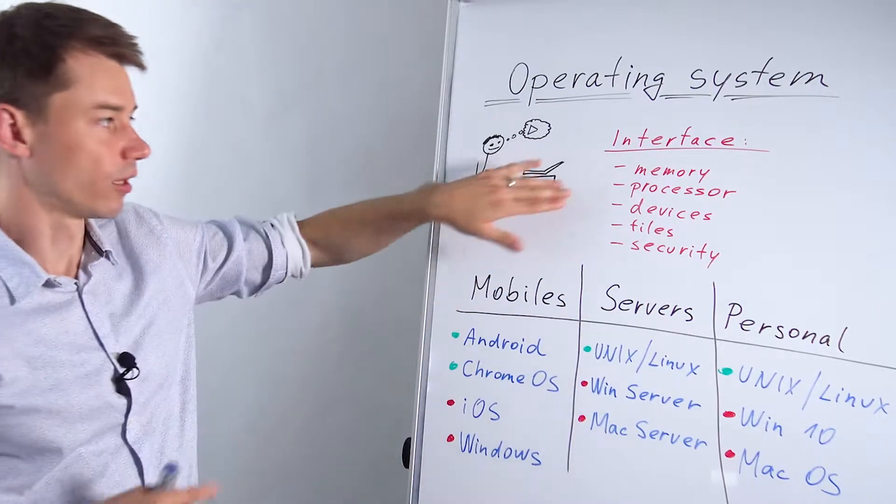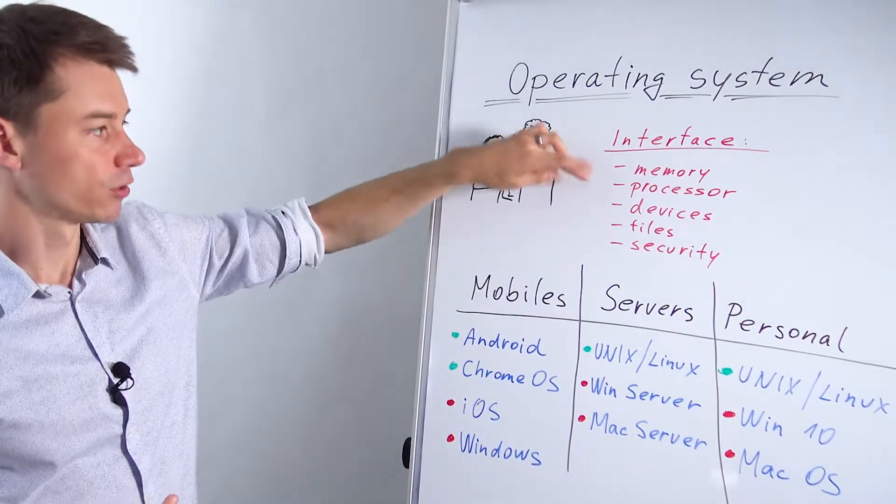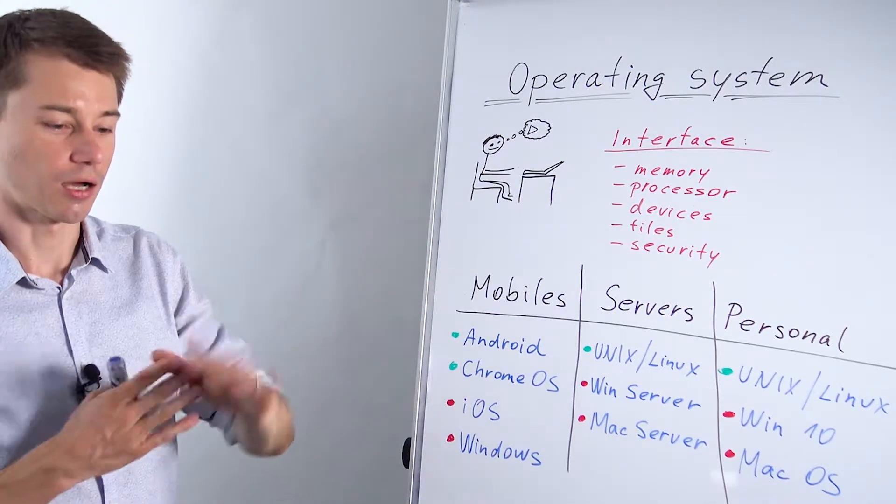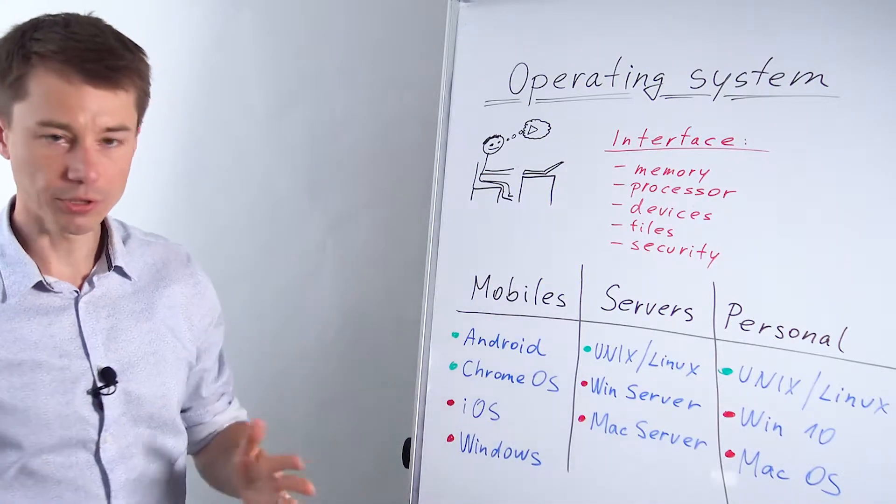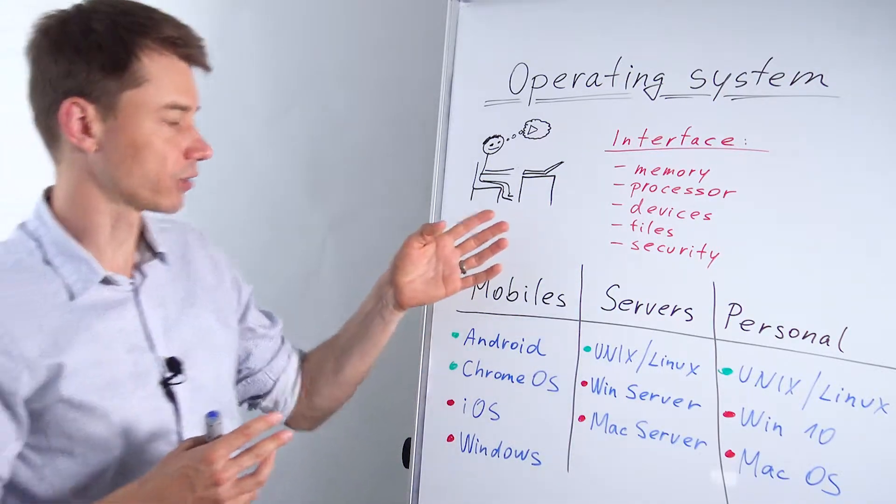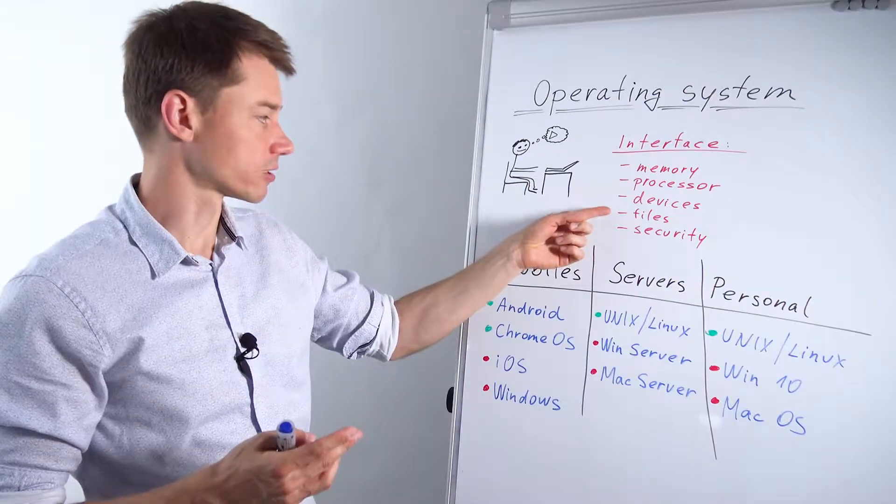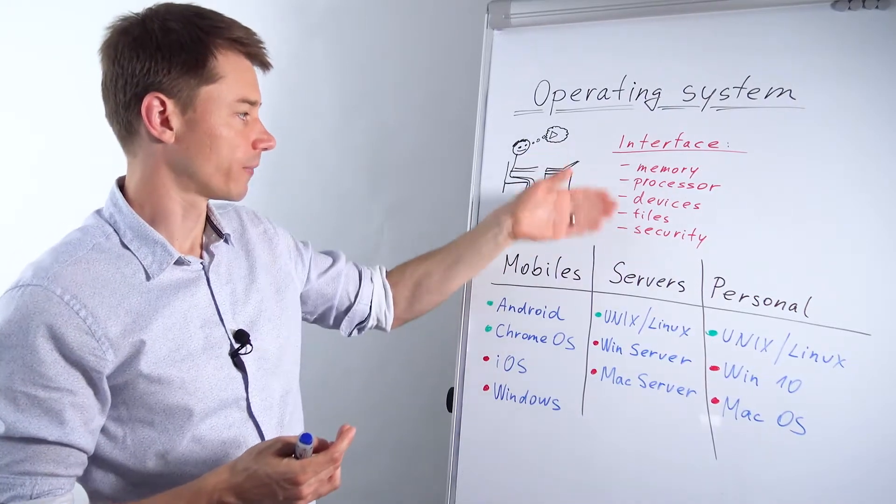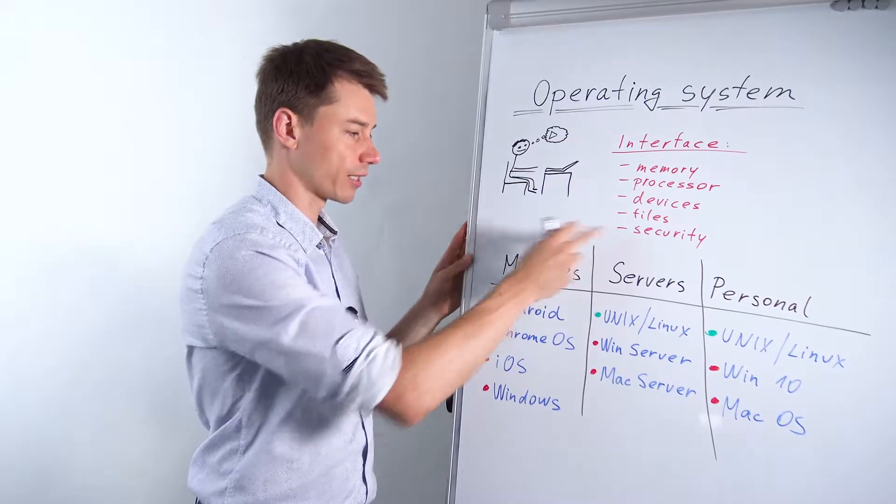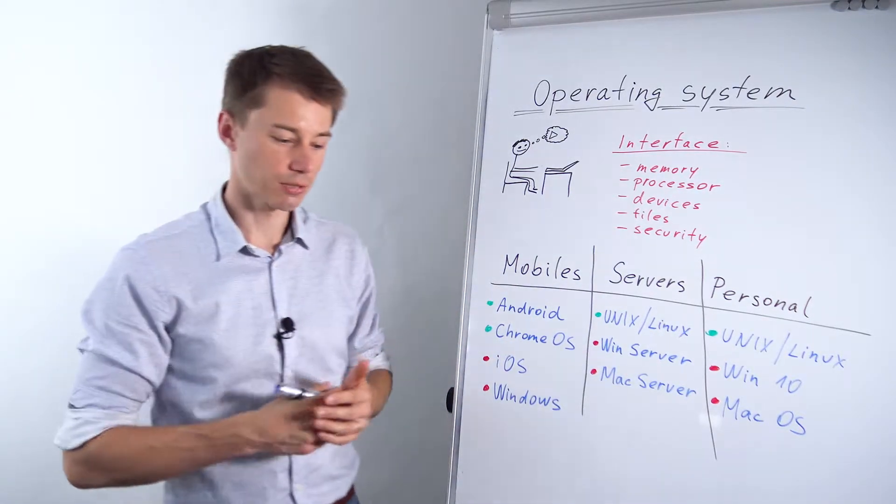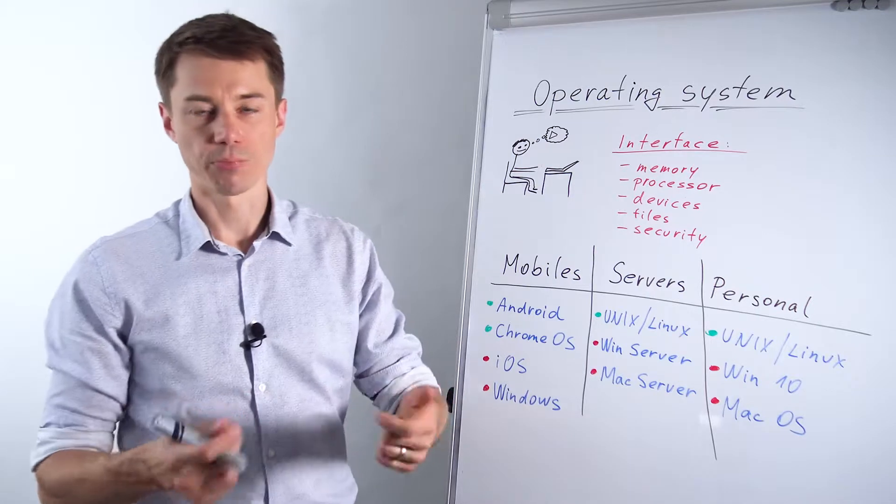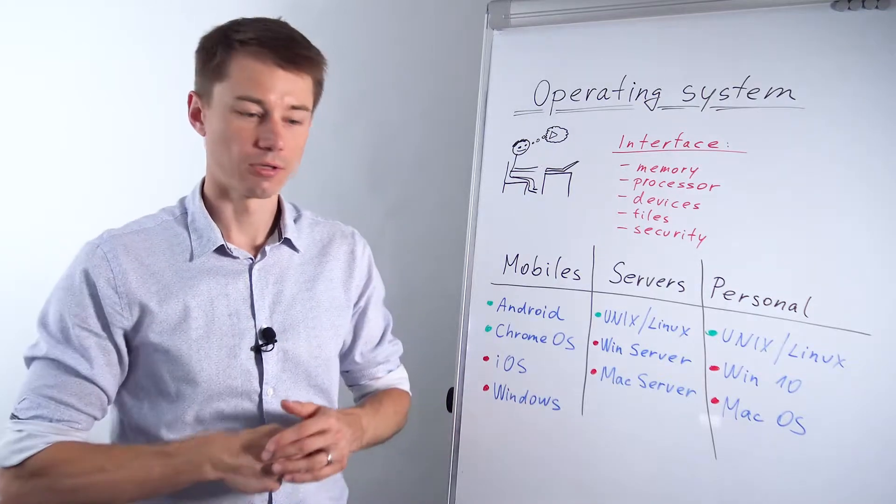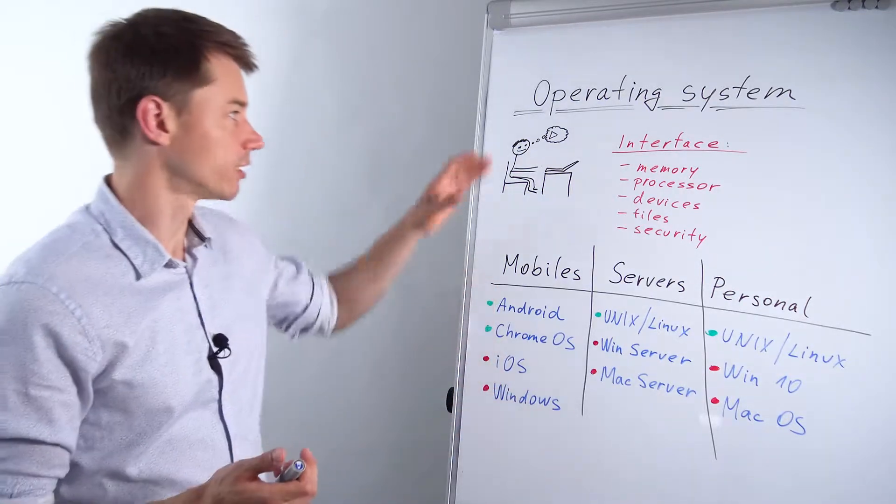So operating system usually serves as an interface to memory, to a processor, to all these devices. Speaking of keyboard, trackpad, mouse, printer, whatever other devices you can think of, external hard drives, files stored on an SSD disk, or security. The operating system takes care of security also. So without an operating system maybe someone else could download files on your drive, it just doesn't make sense right?